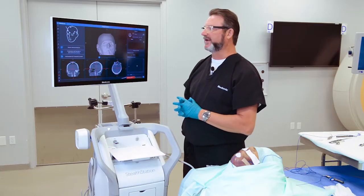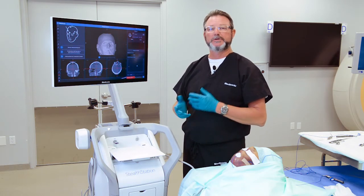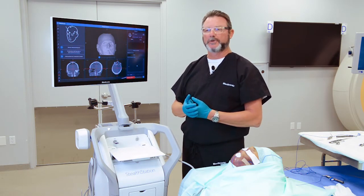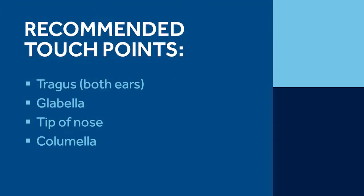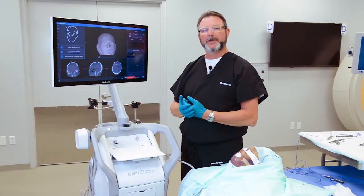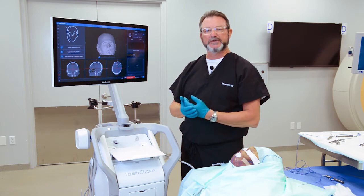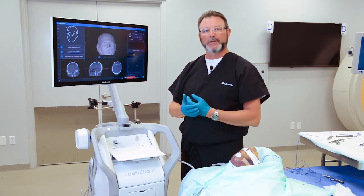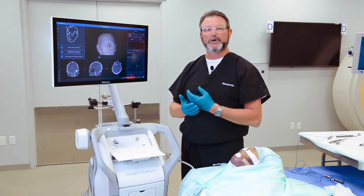The next thing we're going to do is select five landmarks that we're going to use for registration. The ones I recommend using are the tragus of both ears, the glabella of the nose, the tip of the nose, and the columella.